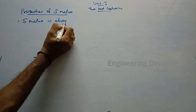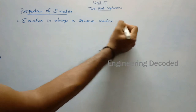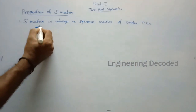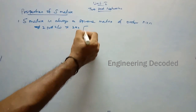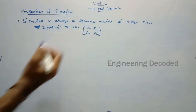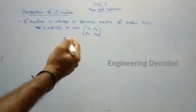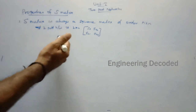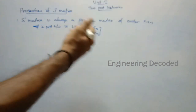The S-matrix is always a square matrix of order N×N. For example, if you take a two-port network, you will have a 2×2 matrix: S11, S12, S21, S22. Similarly, if you have three ports, you will have a 3×3 matrix, which we will see in E-plane T and H-plane T. If there are four ports, we will have a 4×4 matrix, which we will see in a magic T.